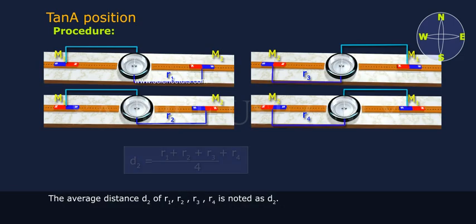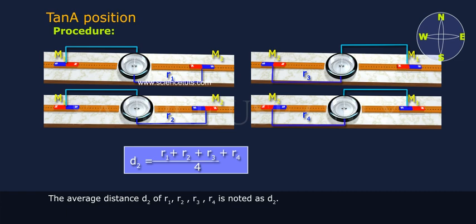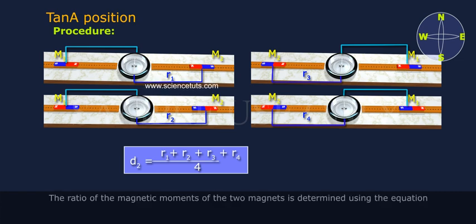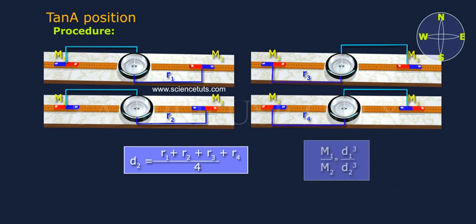The average distance D2 equals R1 plus R2 plus R3 plus R4 divided by 4 is noted as D2. The ratio of the magnetic moments of the two magnets is determined using the equation M1 by M2 equals D1 cube by D2 cube.